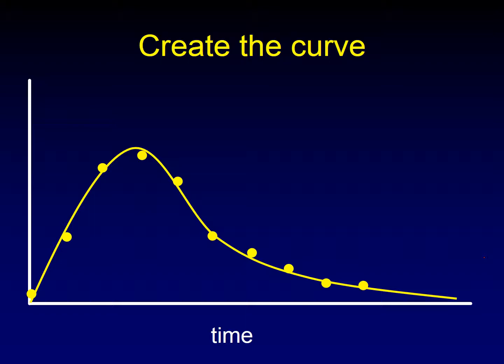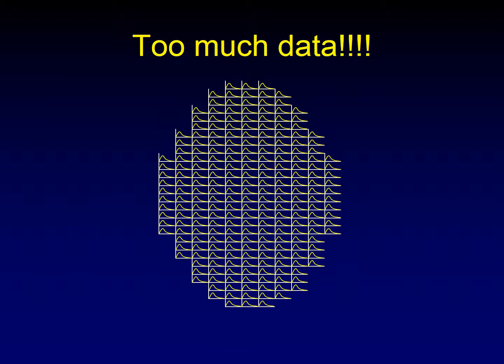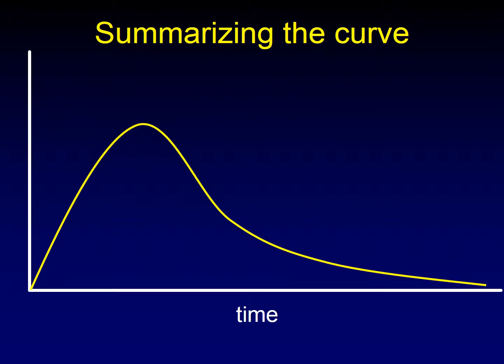We generate this curve at every single pixel on the CT scan. So if we showed you that curve at every single pixel, it would look something like this — every pixel in the image would have its own curve. It would be impossible for our eyes to analyze that much data, so we've got to find a way to summarize the curves at every single pixel and turn these complex curves into a few simple parameters.